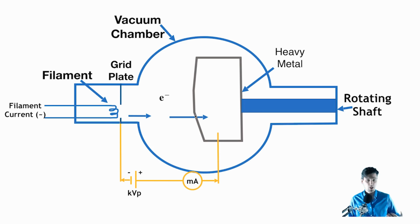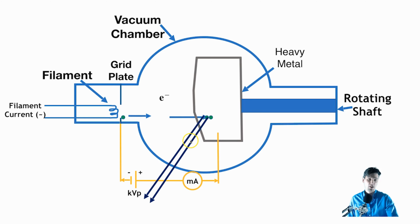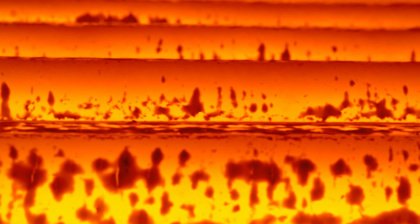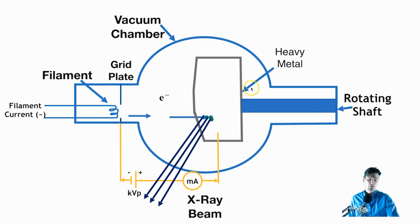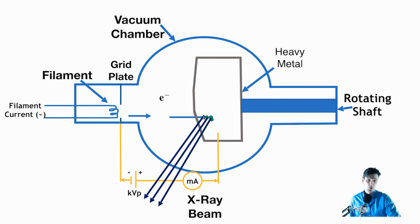In that waterfall analogy, mA is how much water is coming down the waterfall, and KVP is the height of the waterfall. The electrons will hit the heavy metal target, and then photons will come out. Electrons are coming in and photons are coming out — that's how our x-ray beam is generated with a diagnostic x-ray scanner. One concern is that the anode gets very hot from the electrons hitting it. So in modern x-ray tubes, the anode is rotating — rotating in and out of this plane about a shaft — so the electrons aren't always hitting the same spot. The anode is also called the target, and rotating it prevents any one area from getting too hot.